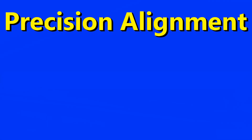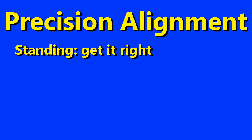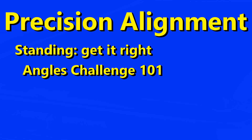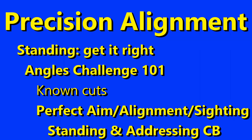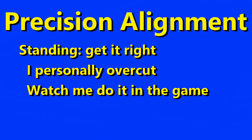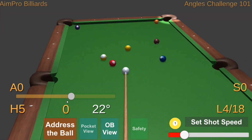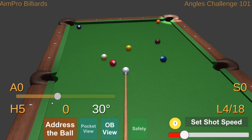I'd suggest several things. Learn the sighting for shots while standing so that your starting position is more precise. I recommend the Angles Challenge 101 game, which presents known cut angles, and you can view the exact alignment for each of up to 32 cut angles while both standing and while addressing the ball. Personally, I learned that I tend to align to overcut shots in the standing position, and when I settle on the shot, I have to correct that.